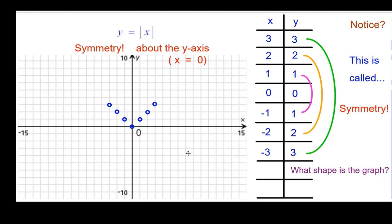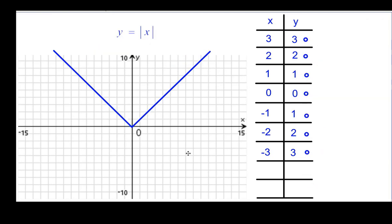And what shape is the graph? Well, it's the letter V. We'll go ahead and connect the dots and see that V. And this is the graph of y equals absolute value of x.